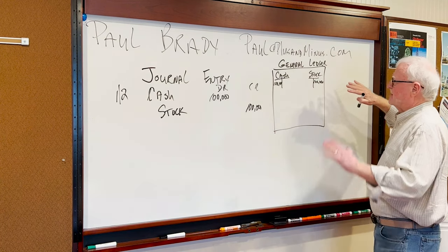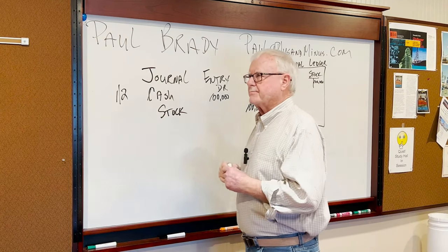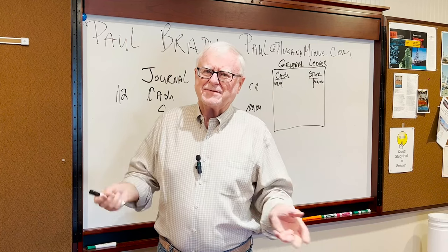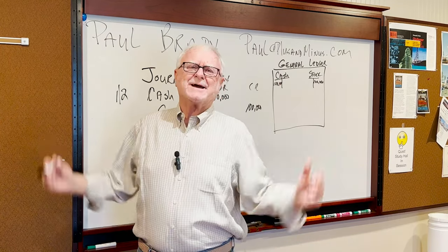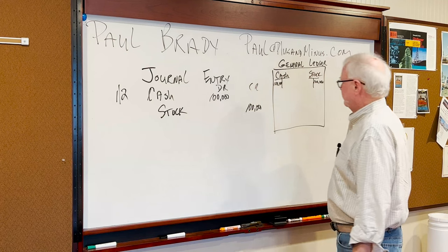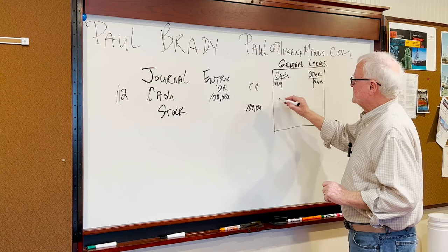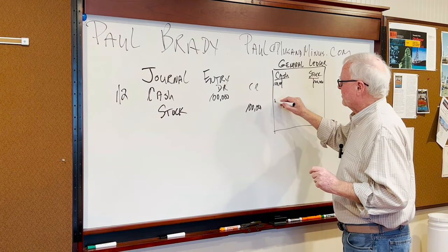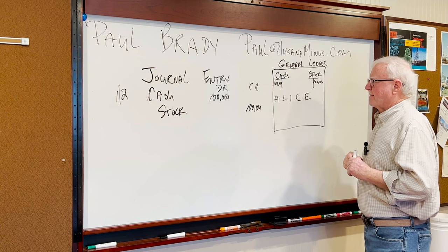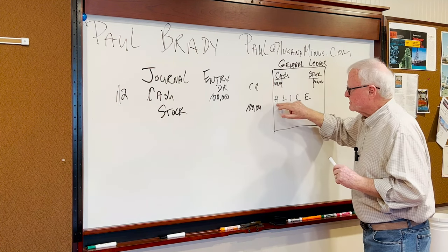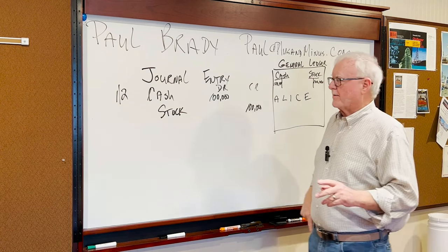This general ledger can be massive. Think of the general ledgers for Walmart — think of the inventory accounts at Walmart, increasing and decreasing millions of times a second throughout the world. The general ledger is composed of every single one of those five major categories: assets, liabilities, capital, and expenses. Each one of those can have sub-accounts and sub-sub-accounts, depending upon your software.